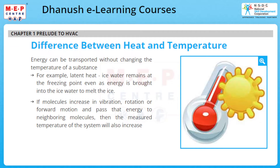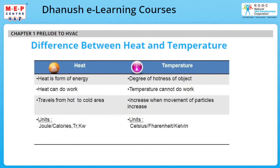Let us briefly look at the differences between heat and temperature. Temperature is the degree of hotness of an object. Heat can do work; temperature cannot do work. Heat travels from hot to cold areas. Temperature increases when movement of particles increases. Units of heat are Joules, calories, tonne of refrigeration, and kilowatt. Temperature has units of Celsius, Fahrenheit, or Kelvin.